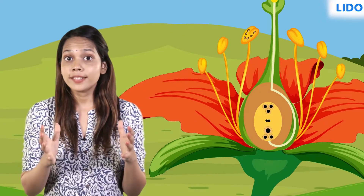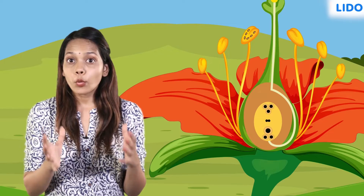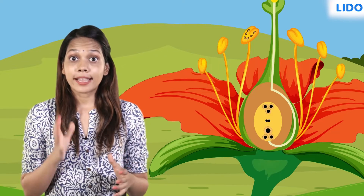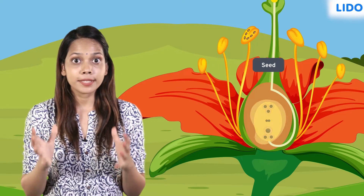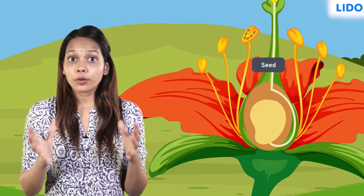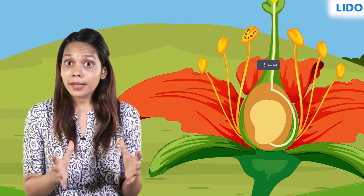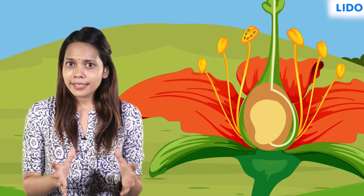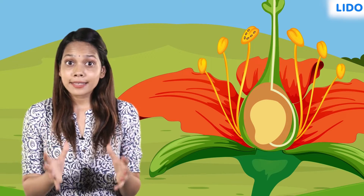Once fertilization is done, the ovule which contains the zygote develops into seeds. The covering of the ovule becomes the seed coat. At this point, the accessory whorls of the flower — sepal and petal — fall off, and the ovule grows into a fruit. Now we know how we get the yummy fruits we eat, right?